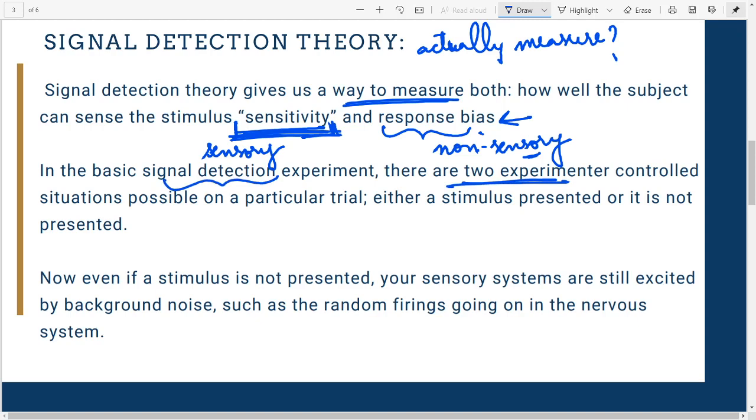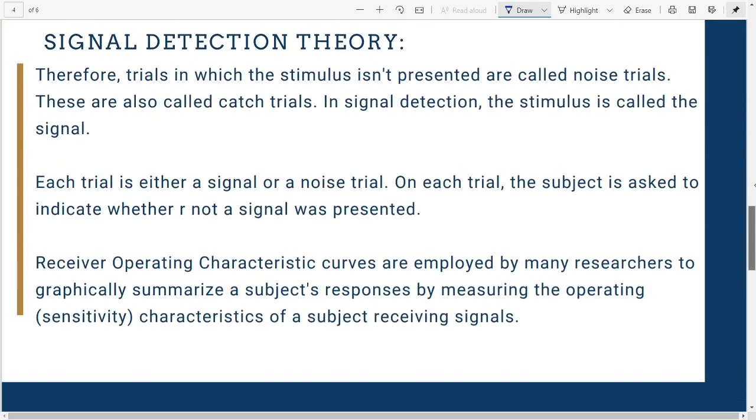In the basic Signal Detection experiment, there are two situations. In one situation the stimulus is present—you hear some sound or song. In the other trial, this sensory stimulus is not present and you're given a noise trial where there's just some kind of noise. Even if a stimulus is not present, sometimes our sensory systems still get excited by background noise and neurons fire randomly, making you confused and you end up making a mistake.